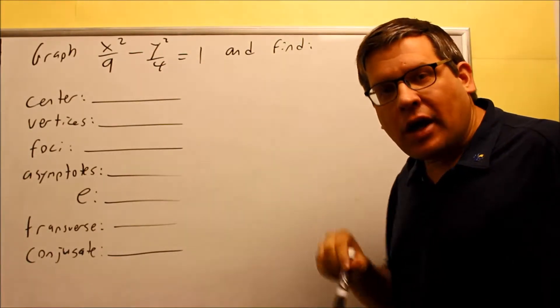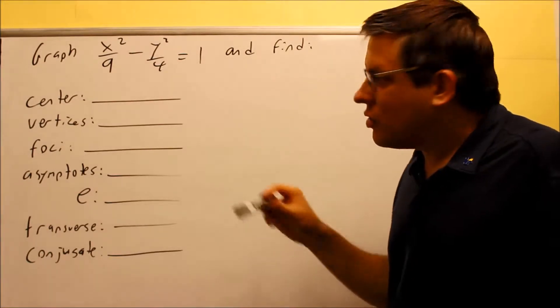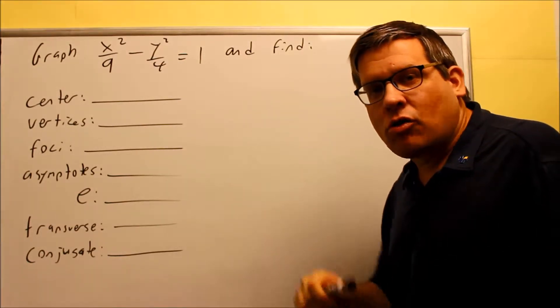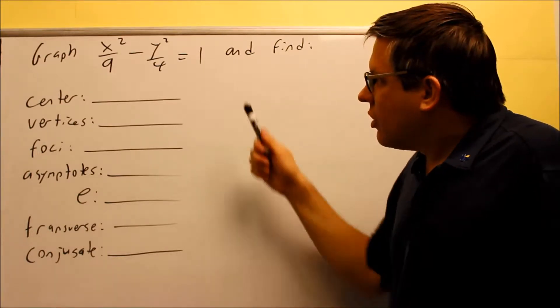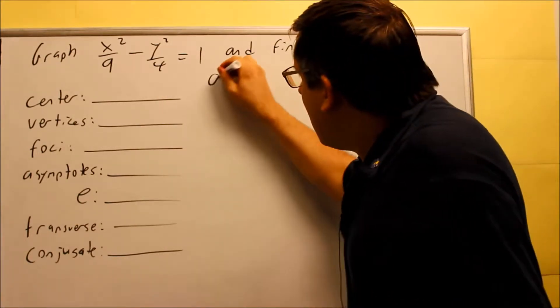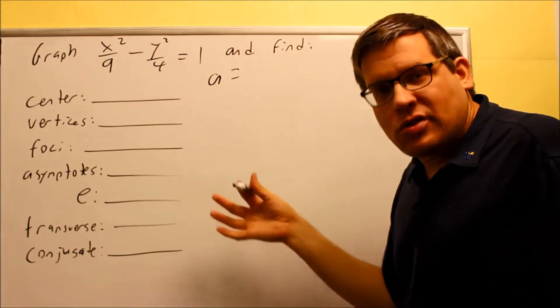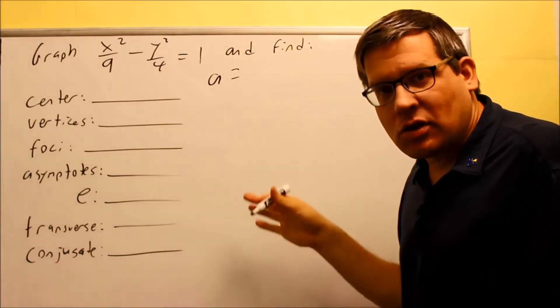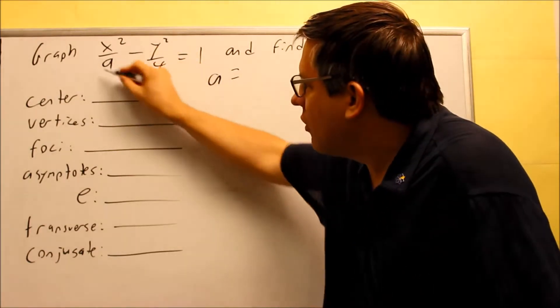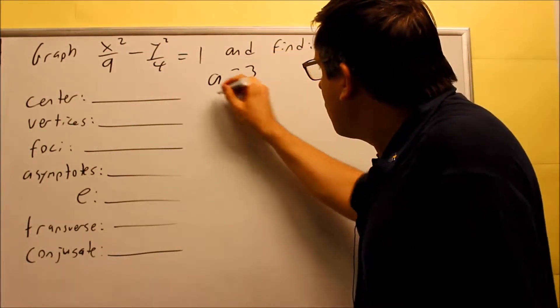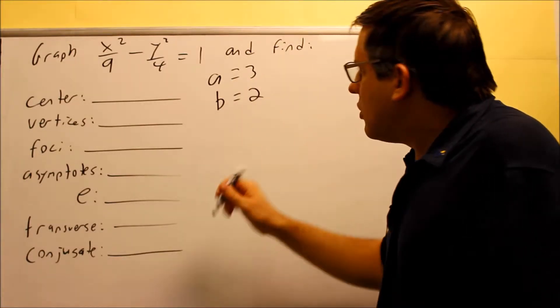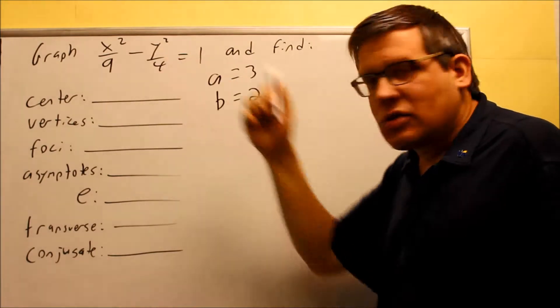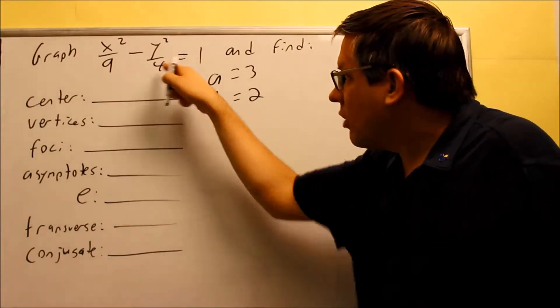It doesn't matter which one's larger. In this case, if I look at that formula, my a coincidentally happens to be the larger one, but we're picking it because it's physically underneath that first fraction there. Your a is going to be three and your b is going to be two, and we're still taking the square root of each of those numbers because in the models this is a squared and that's b squared.